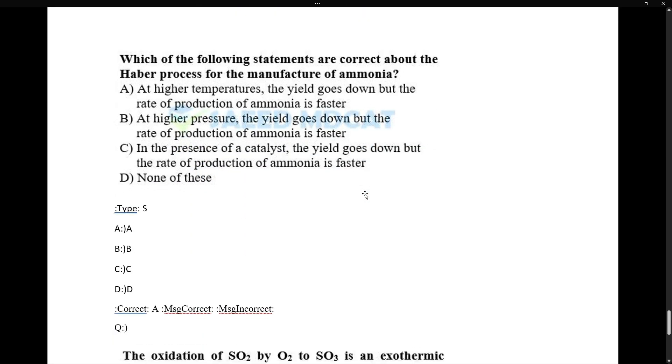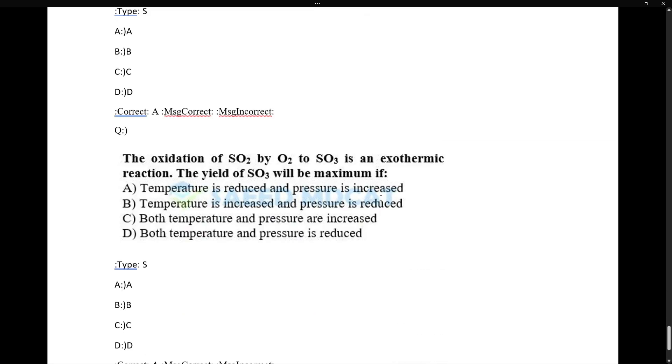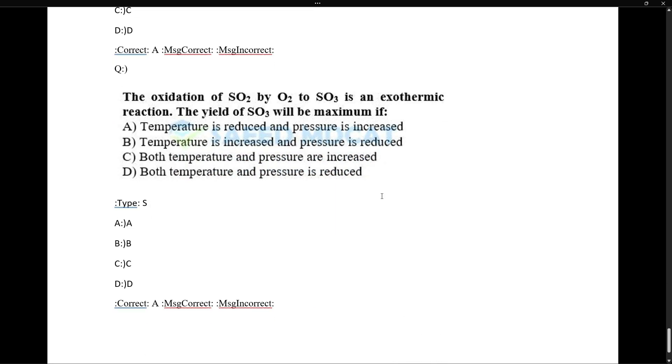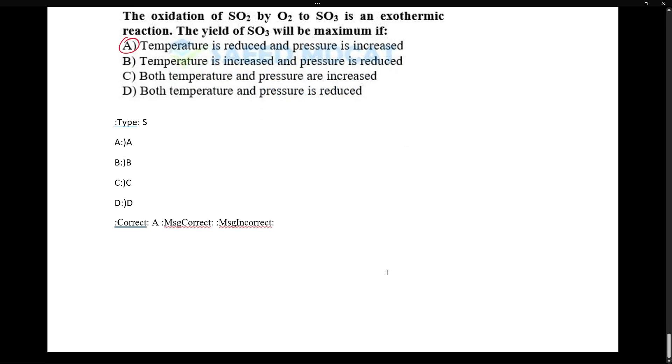Which of the following statements are correct about the Haber process for the manufacture of ammonia? At higher temperature, yield goes down but rate of ammonia formation is faster, because exothermic reaction and temperature will increase the rate. Oxidation of SO2 to SO3 is an exothermic reaction. Which of the following will give us maximum yield? Temperature is reduced and pressure is increased. This question is repeated. We will meet in the next topic. Assalamualaikum.